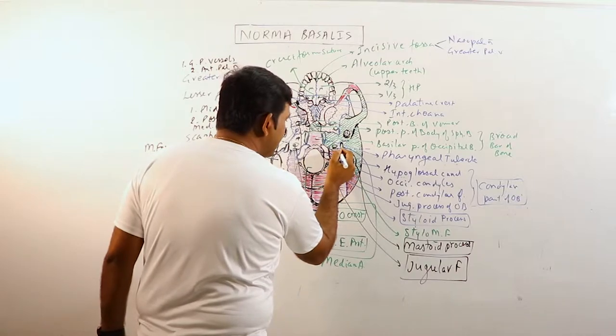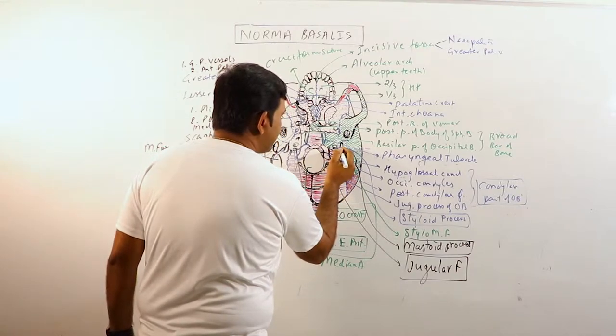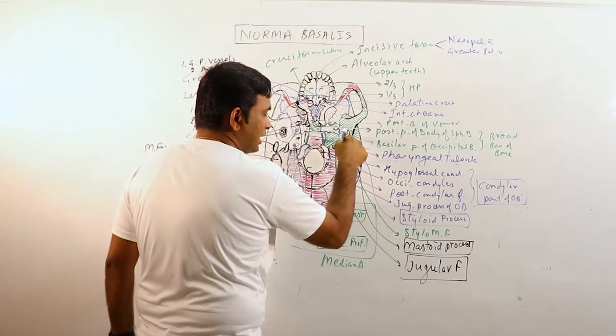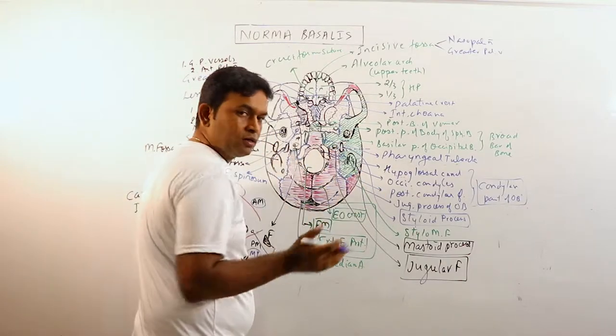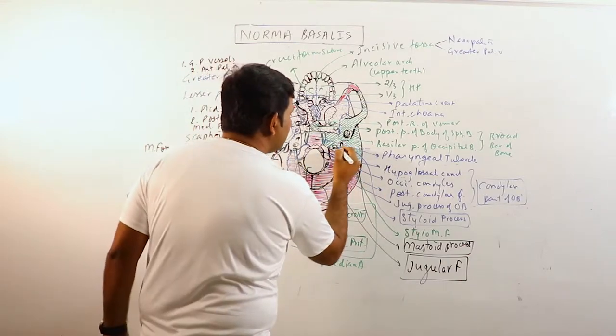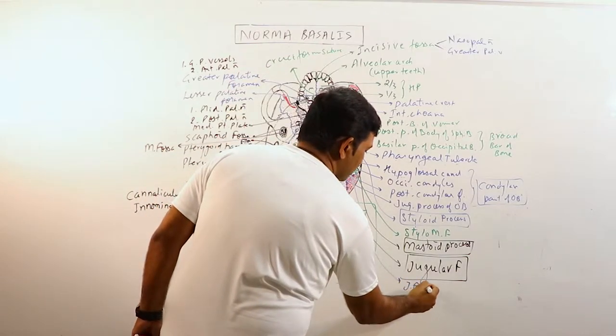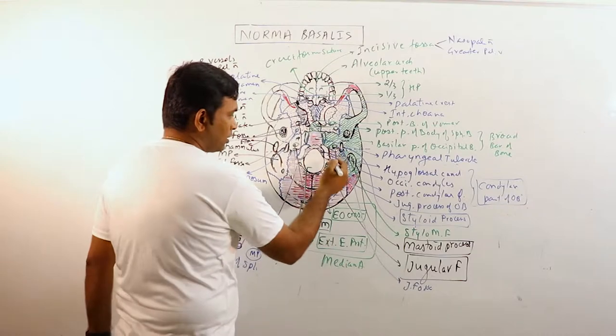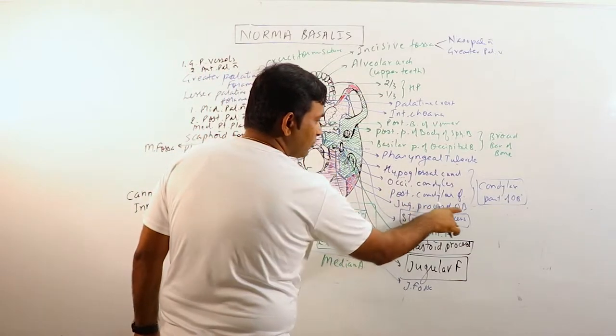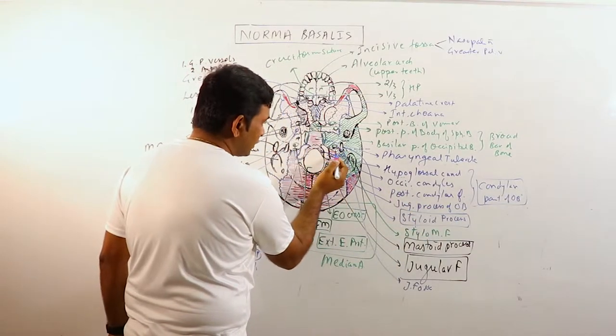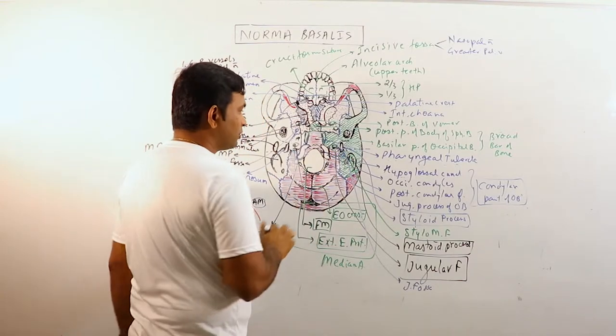And in the lateral part, the petrous part of the temporal bone is hollowed to become the jugular fossa. This jugular process of the occipital bone forms the posterior border of the jugular foramen.